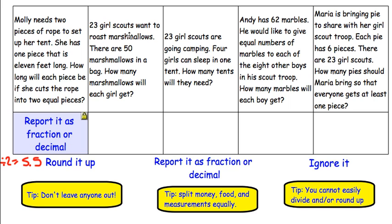The next one is: 23 Girl Scouts want to roast marshmallows. There are 50 marshmallows in a bag. How many marshmallows will each girl get? 50 divided by 23 girls is going to equal 2 with a remainder of 4. So those 4 extra marshmallows — there is not enough for each girl to get another one. So we are going to go ahead and ignore the remainder. We cannot easily divide 50 by 23, and it wouldn't make sense to round this up, so we are going to go ahead and ignore it.